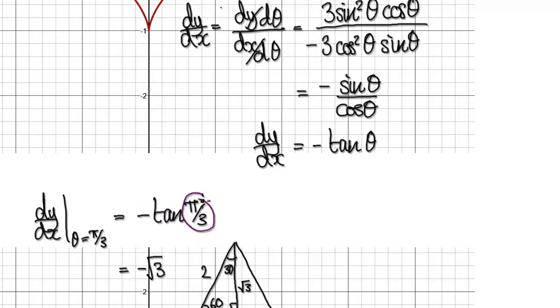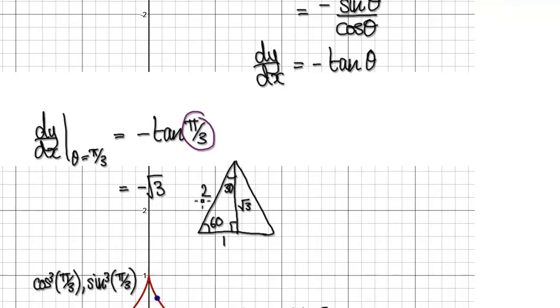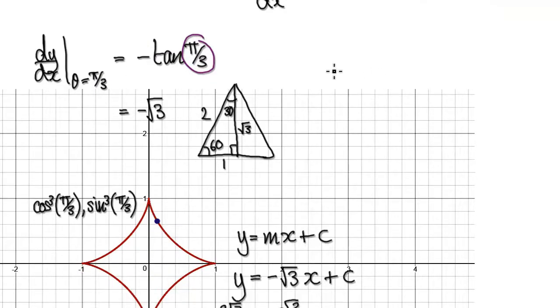This is a common angle. Whenever you see tan pi over 3, remember in radians, all the way here would be pi. Pi divided by 3, so this must be 60 degrees. So when you see pi over 3, then think about an equilateral triangle.